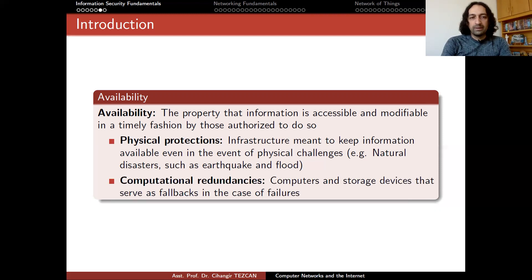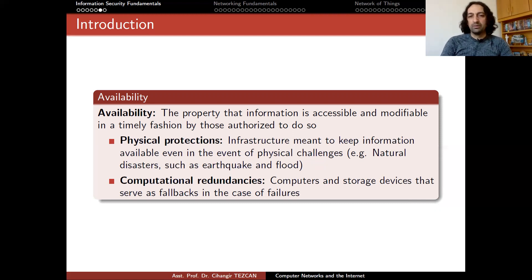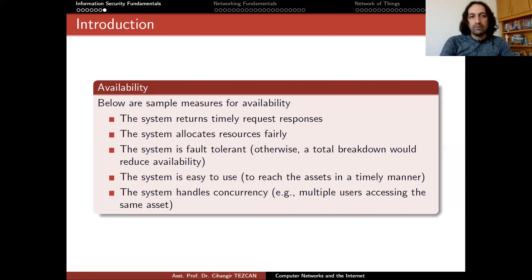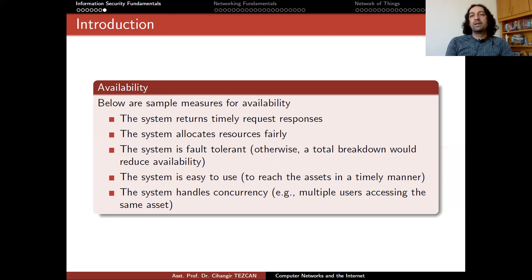Another measure for availability is computational redundancies — computers and storage devices that serve as fallbacks in the case of failures. This is mostly what we do for denial of service attacks. The system should return timely request responses. In a denial of service attack, when you try to reach a service or web page, your session times out with an error saying you couldn't reach the server. The server is not actually down — it is overrun and cannot respond in a timely fashion.